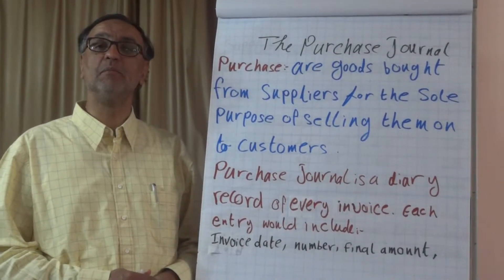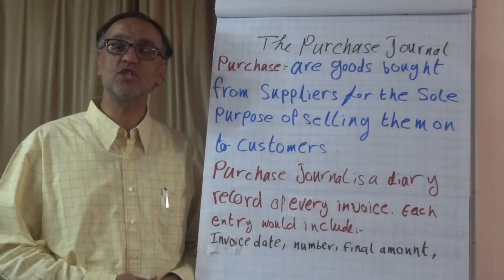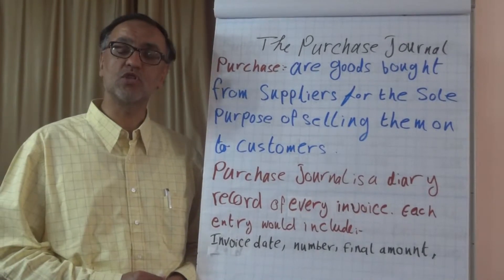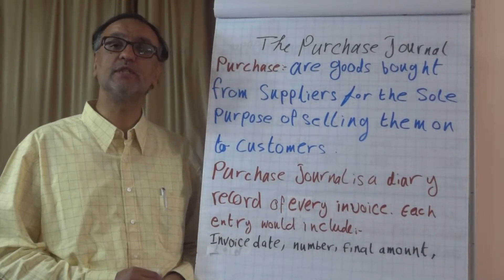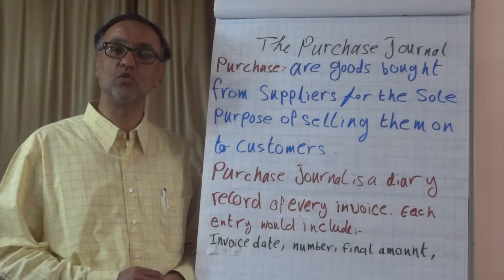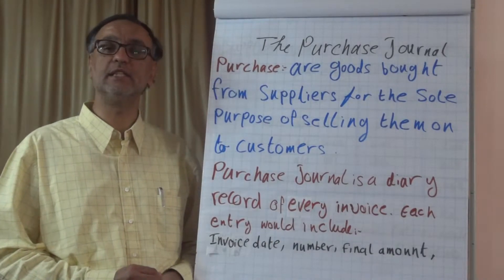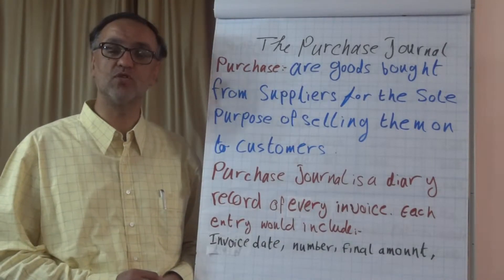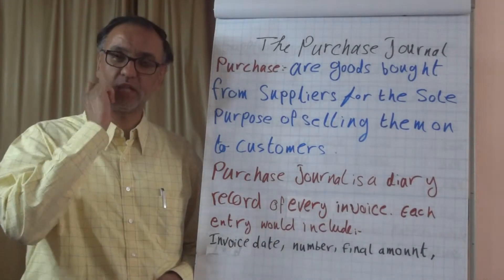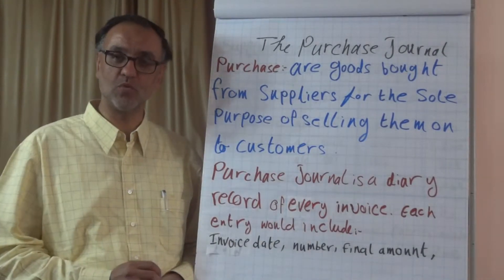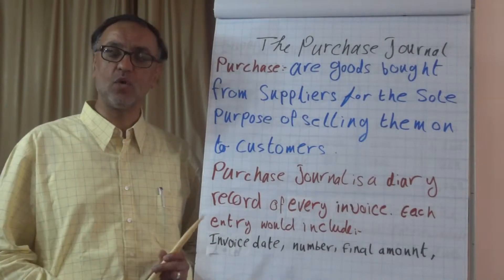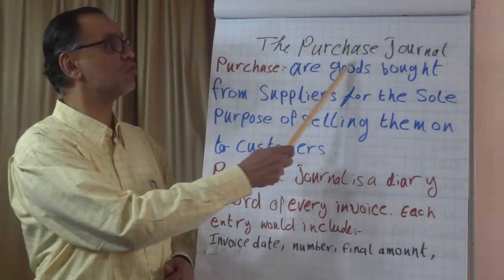Salam alaikum. This is the second session in the Books of Prime Entry. Remember we ended the last session saying we are going to talk about the purchase journal, sales journal, sales return journal, and purchase return journal. We also said that the session after that we'll do the cash book and general journal. So here we start with the purchase journal.